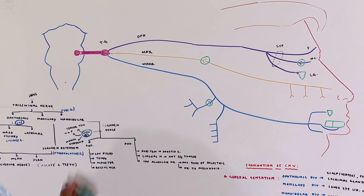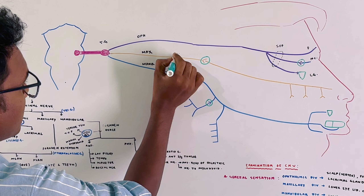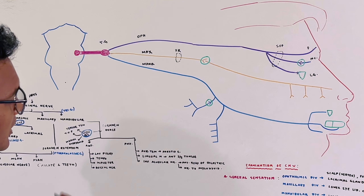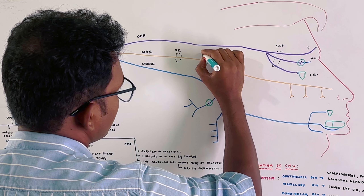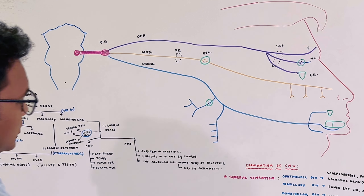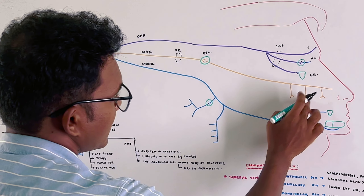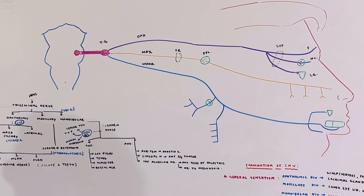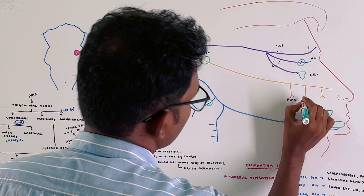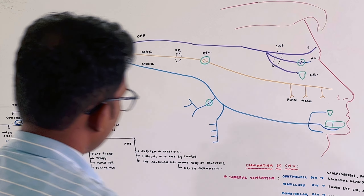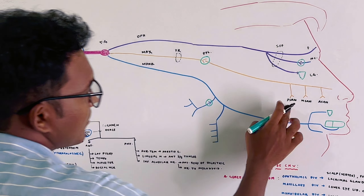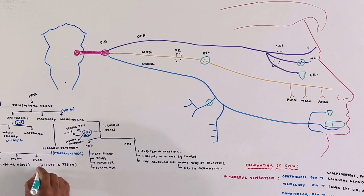The maxillary division passes through the foramen rotundum. It carries branches through the pterygopalatine ganglion. The branches include the superior alveolar nerve and the anterior superior alveolar nerve, supplying the palate and teeth.